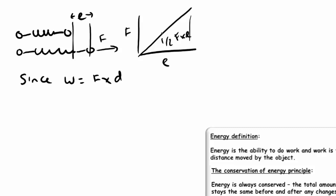So, force times extension, but it's half force times extension because we're getting the area of that triangle, which is going to be equal to elastic energy. So, one formula for elastic strain energy would be a half force times extension.